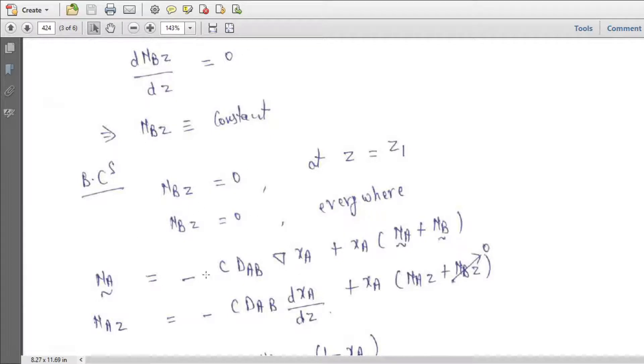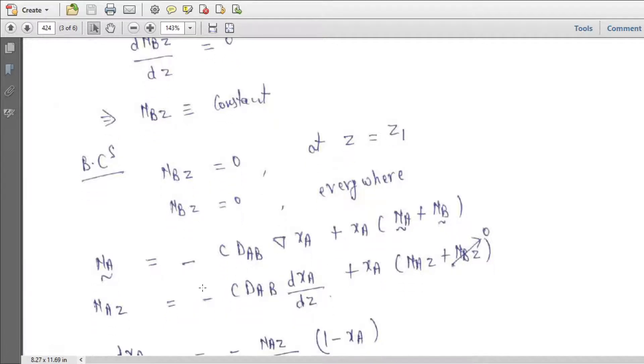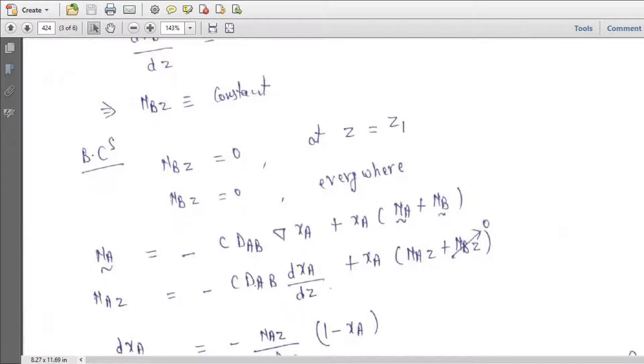So NA equal to minus C DAB del XA plus XA times NA plus NB. So NAZ equal to minus C DAB d XA upon d Z plus XA times NAZ plus NBZ. So NBZ is zero everywhere.